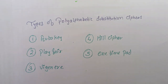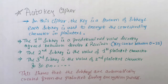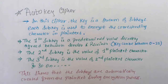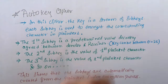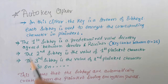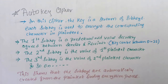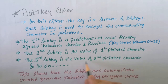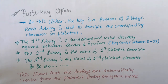Let us start with auto key. In this cipher the key is a stream of sub keys, and each sub key is used to encrypt the corresponding character in plain text. The first sub key is a predetermined value secretly agreed between sender and receiver, and the key can be between 0 to 25. The second sub key is the value of the 1st plain text character, the third sub key is the value of the 2nd plain text character, and so on. This means the sub keys are automatically created from the plain text during the encryption process.